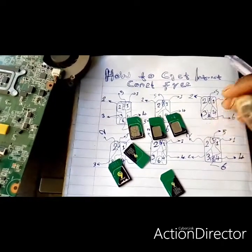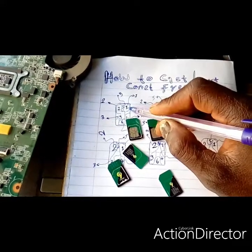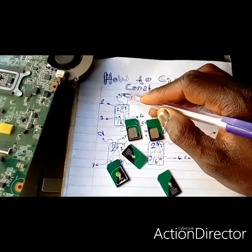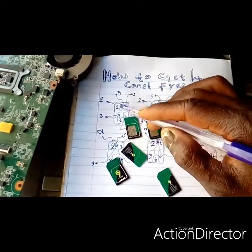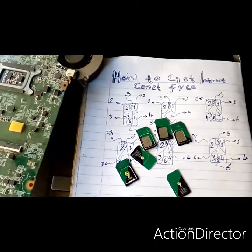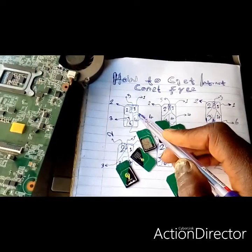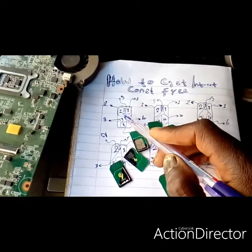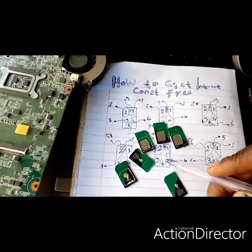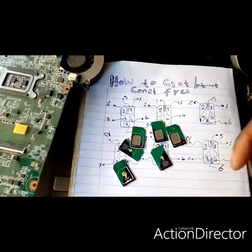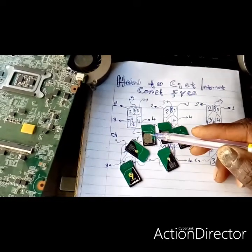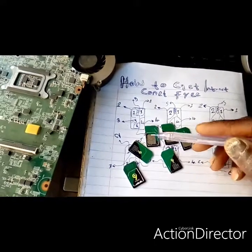If you look carefully, try drawing from here — partition 1, partition 2, partition 3, partition 4, partition 5, partition 6. How do you want to find which point gives free internet connection, which point gives free calls, and which point gives free SMS? Just try all 6 SIM card partitions.